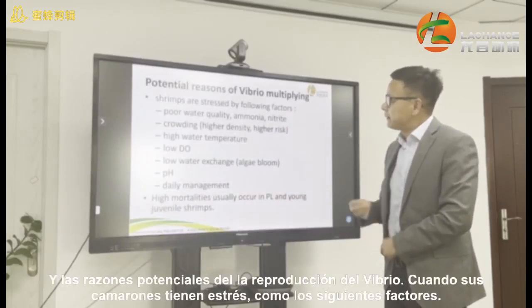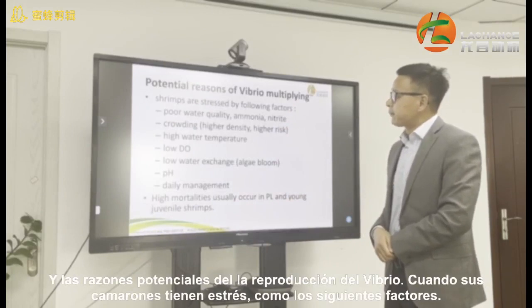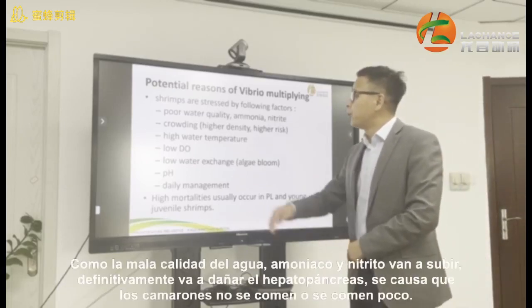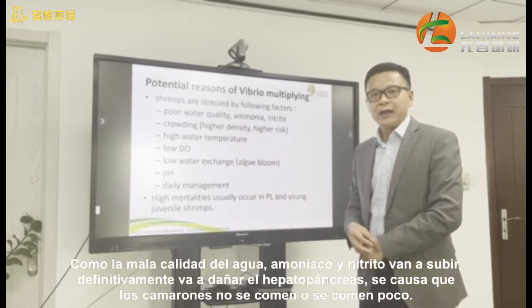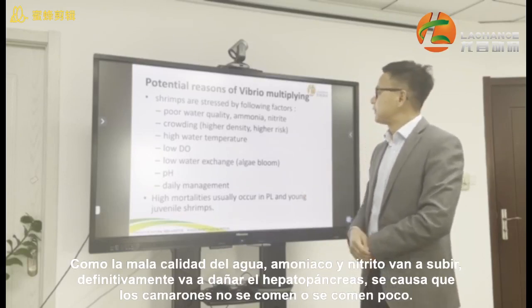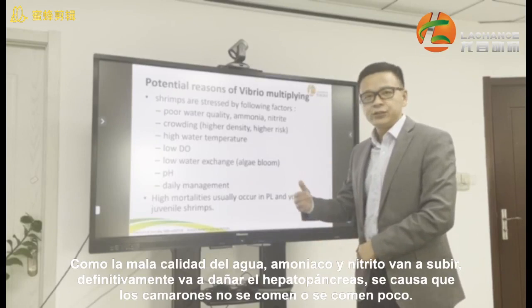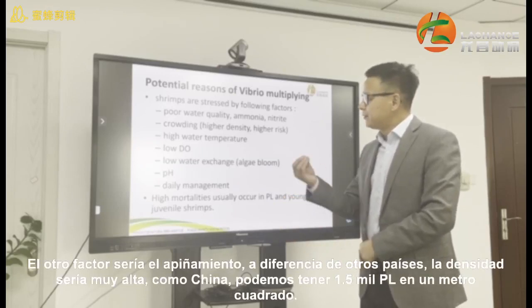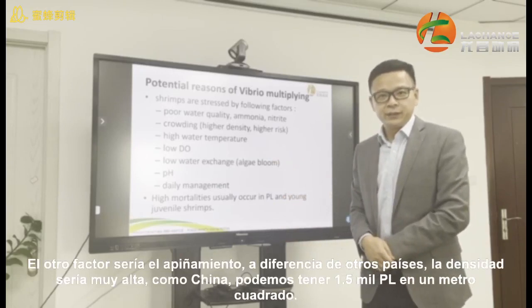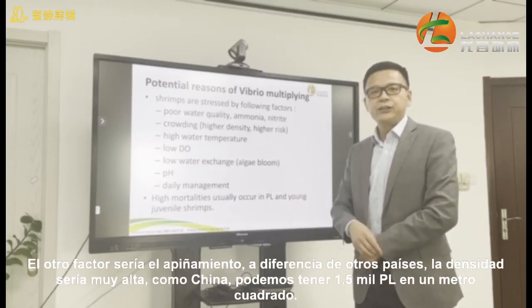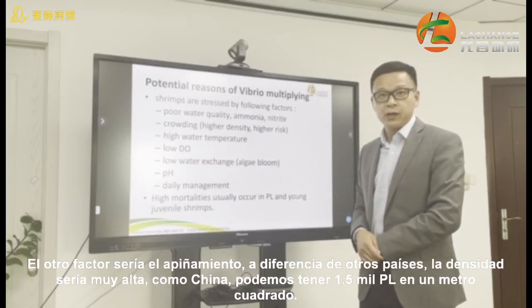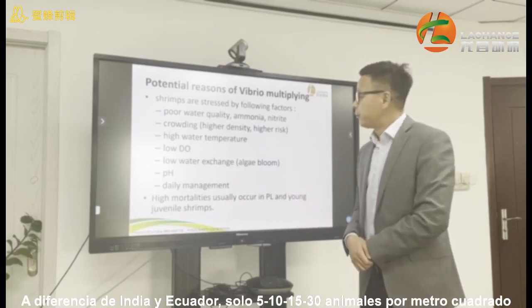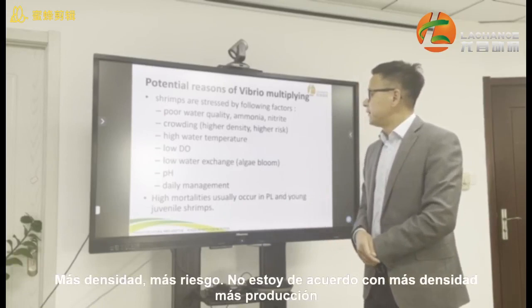The potential reasons for Vibrio multiplying: when your shrimp are under stress from factors like poor water quality — specifically ammonia and nitrite. When ammonia and nitrite go up, they will definitely damage the hepatopancreas. Then the shrimp will stop feeding or feed less. Another factor is overcrowding. From different countries, the density varies a lot. In China, we can reach 1,500 PL per square meter, but in India and Ecuador, only 5 to 30 per square meter. The higher the density, the higher the risk.